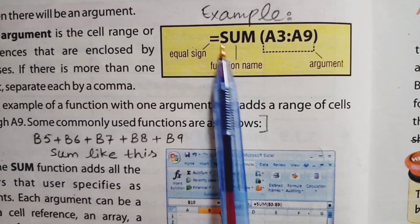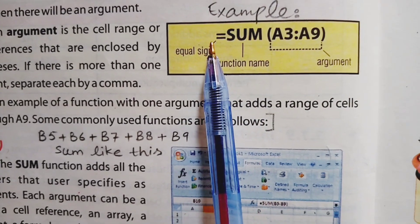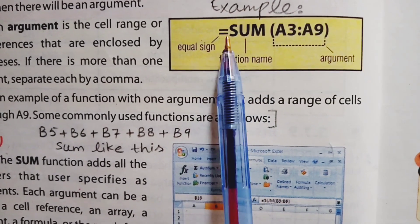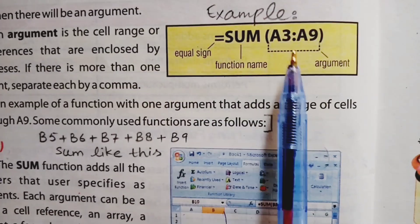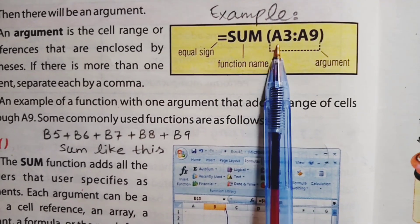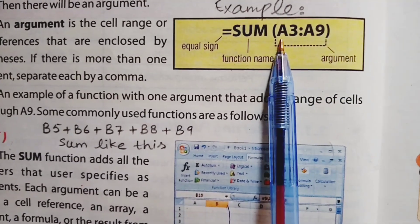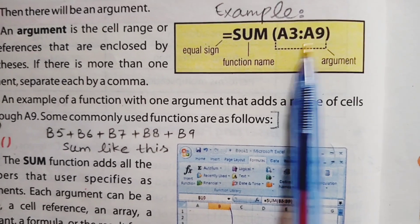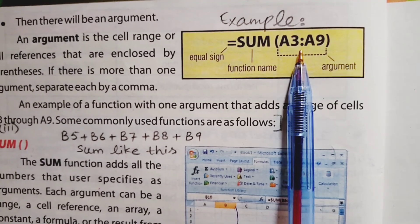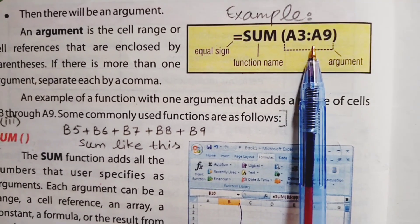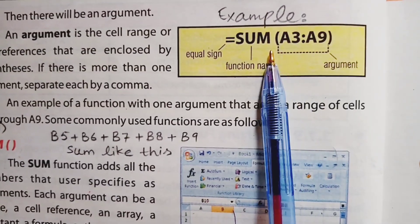Next we will discuss an example. In the example, a function is given and we can see all its parts. The start is the equal sign. After that, the function name is SUM. After the function name comes the argument. In the argument, you can see A3 to A9 — this is a cell range. This cell range is enclosed in parentheses. As discussed, if there are more arguments, we can separate them using a comma. This was our topic for today.